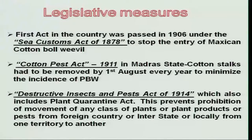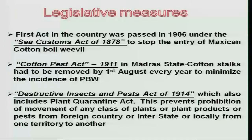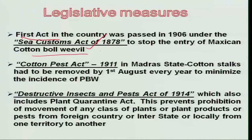First and foremost is legal methods, which are also referred to as legislative measures. If you trace the history of the legal methods, the first act in the country was passed in 1906 under the Sea Customs Act of 1878 to stop the entry of the Mexican cotton boll weevil, which is an important pest in the USA. Then we see the second act, the Cotton Pest Act of 1911, particularly in Madras state.